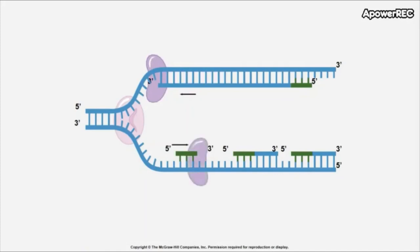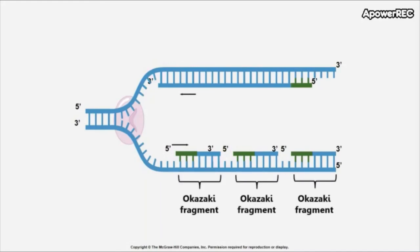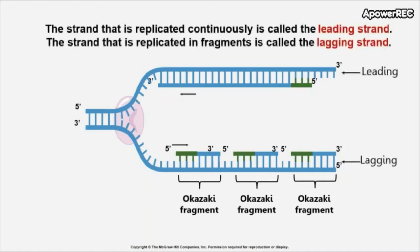DNA polymerase 3 forms another fragment on the bottom strand. These fragments are called Okazaki fragments, named after the scientist who discovered them. The strand that can synthesize in the direction of the replication fork is called the leading strand because it's in the lead in terms of synthesis. The strand that has to synthesize in the opposite direction of the replication fork is called the lagging strand.